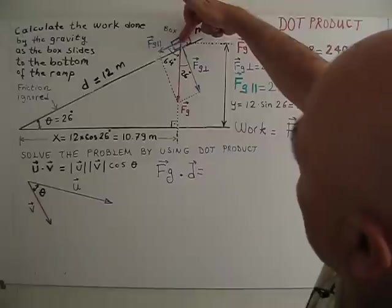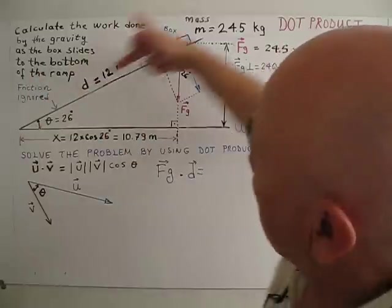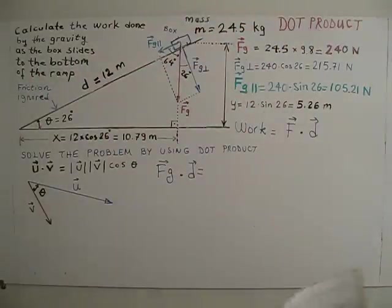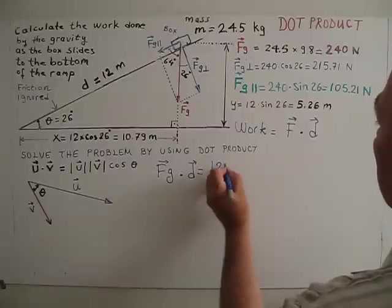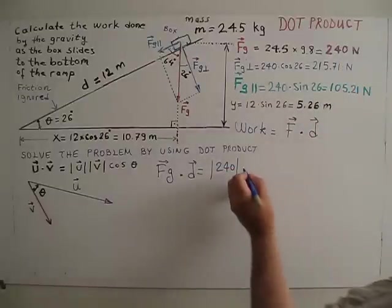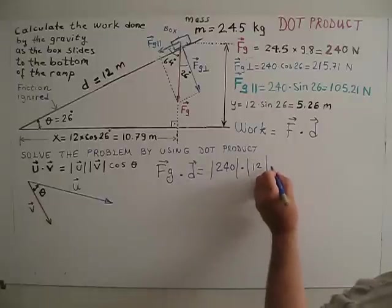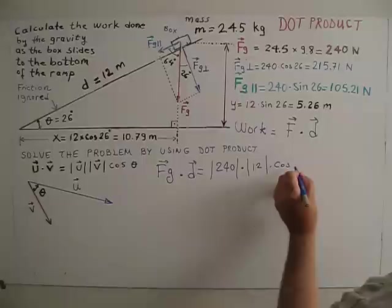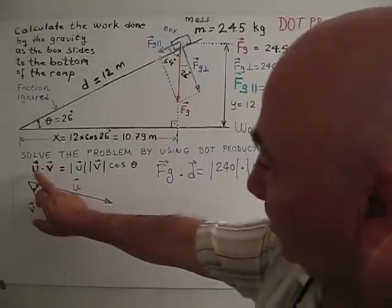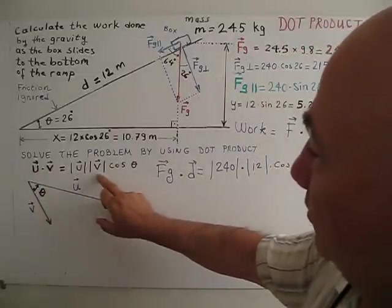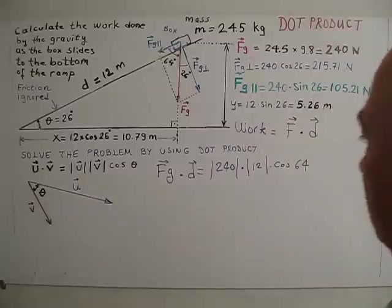FG force vector, D is the displacement vector. I take that product of this. FG, we calculated 240 dot, 12 times cosine 64. I just want to remind you that product again, U dot V, magnitude of U times magnitude of V, then cosine theta, angle in between these two vectors.